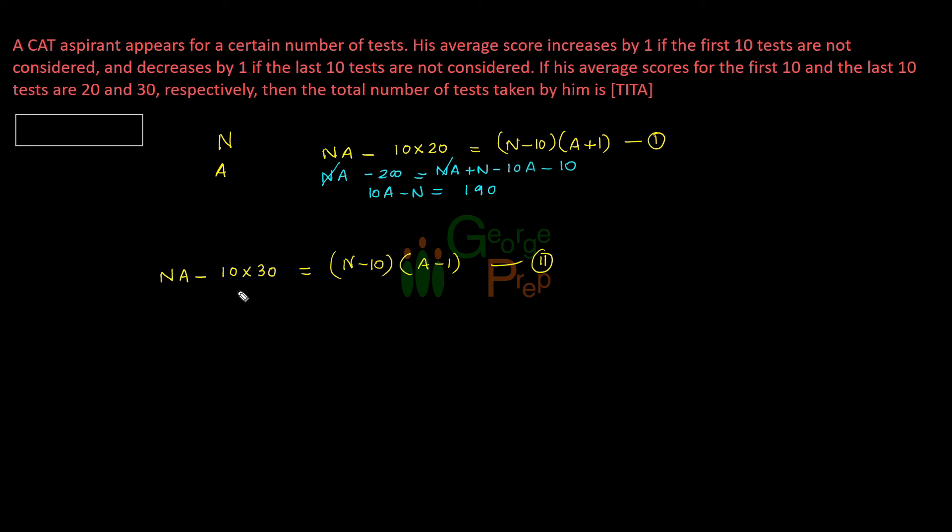Similarly, I can modify this equation as well. This is NA minus 300 that comes to NA minus N minus 10A plus 10. NA here also gets cancelled and I am taking 10A plus N on this side and 310 on the other side. This is 300 plus 10 comes to 310. So I have modified first equation and modified second equation.